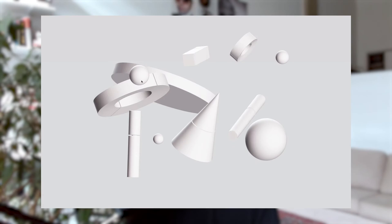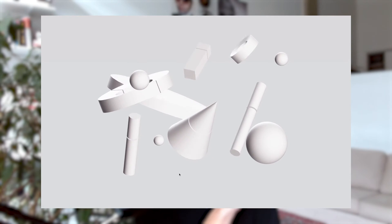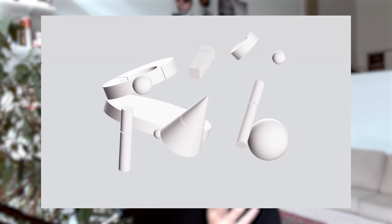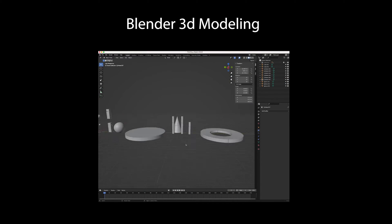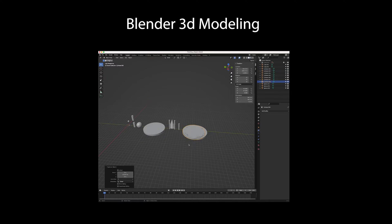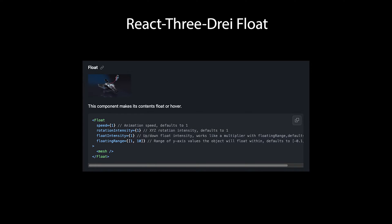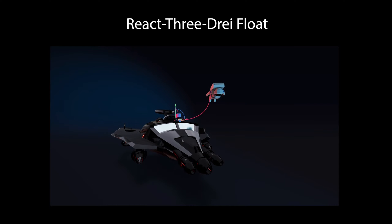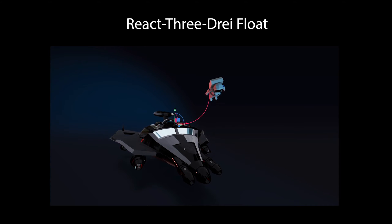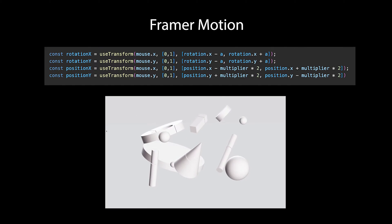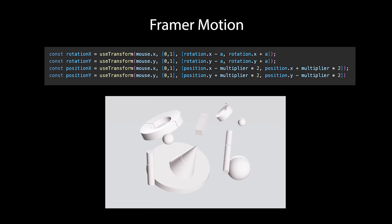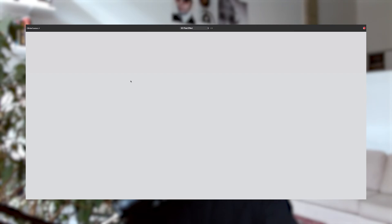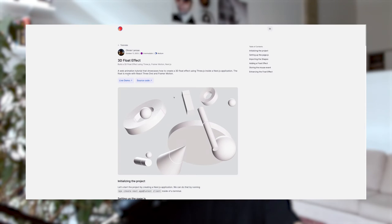Today I'm remaking a classic float animation that I've seen in a lot of award-winning websites. My process was pretty straightforward. First, I went into Blender and created a 3D scene with a bunch of shapes that I imported inside a canvas. Then I used the float utility function from React Three Drei to add a basic float effect to every single shape. And finally, I used Framer Motion to add some asymmetry based on the position of the cursor. You can find the live demo and the source code in the description below.